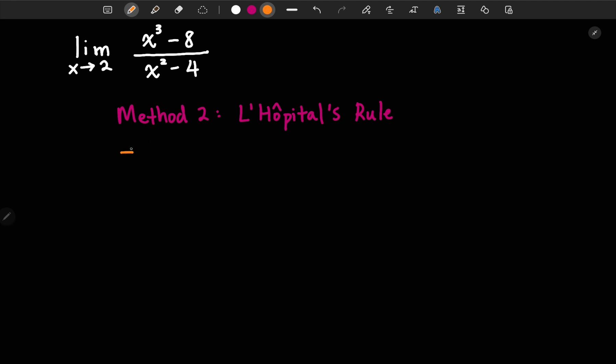So the reason we can use this rule is because we have a 0 over 0 when plugging in x equal to 2. And that, we said earlier, is called an indeterminate form.